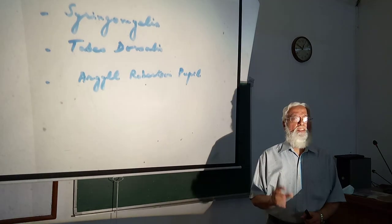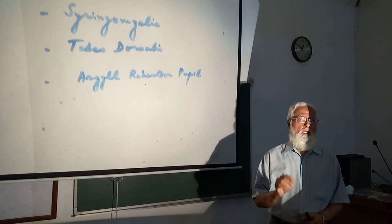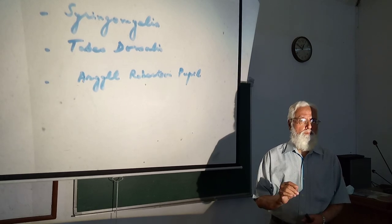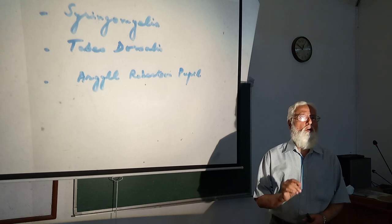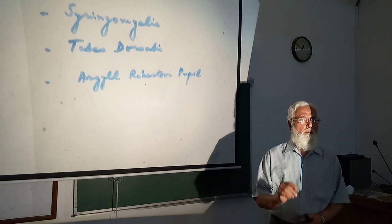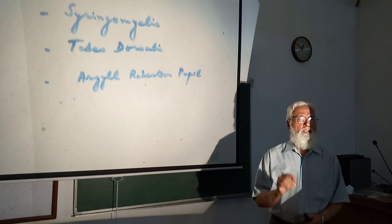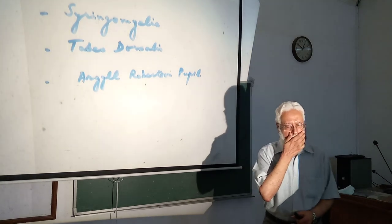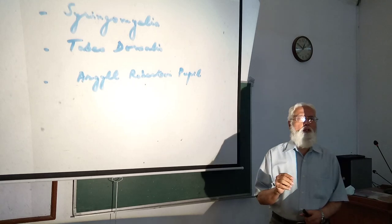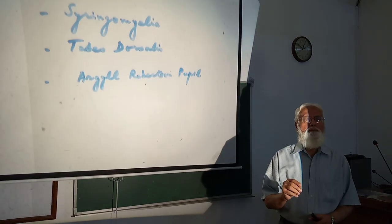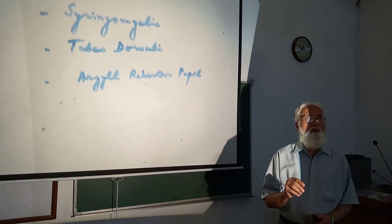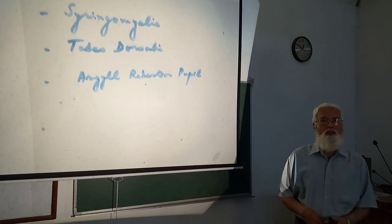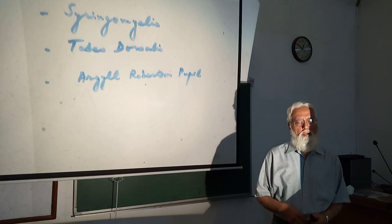In Syringomyelia, there is excessive overgrowth of neuroglia tissue with cavity formation in the grey matter surrounding the central canal of the spinal cord.